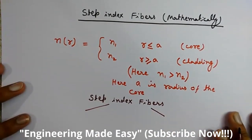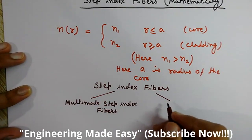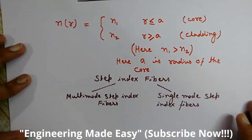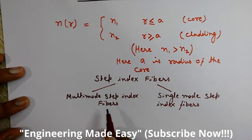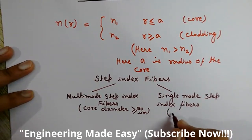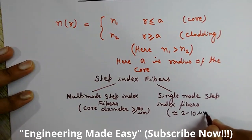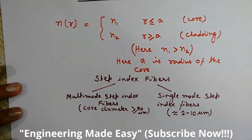Step Index Fibers can be of two types: multi-mode step index fibers and single mode step index fibers. These are the two categorizations of step index fibers. Multi-mode fibers have a core diameter greater than 50 micrometers, while single mode fibers have a core diameter nearly equal to 2 to 10 micrometers.